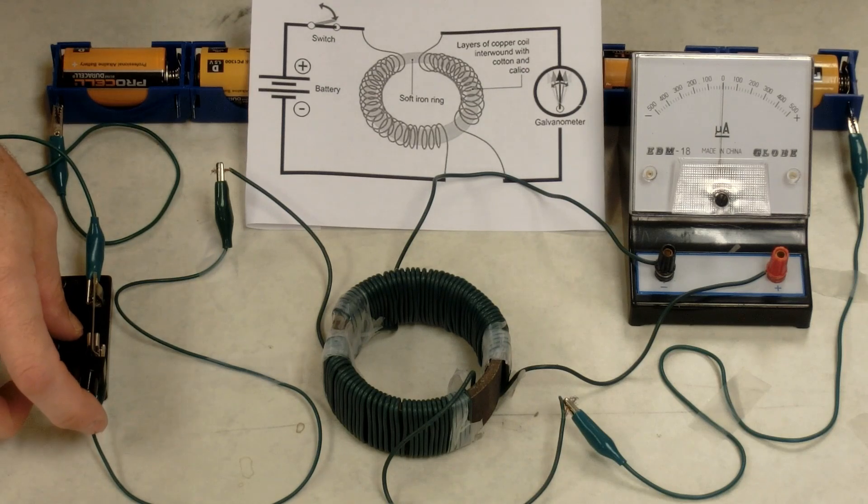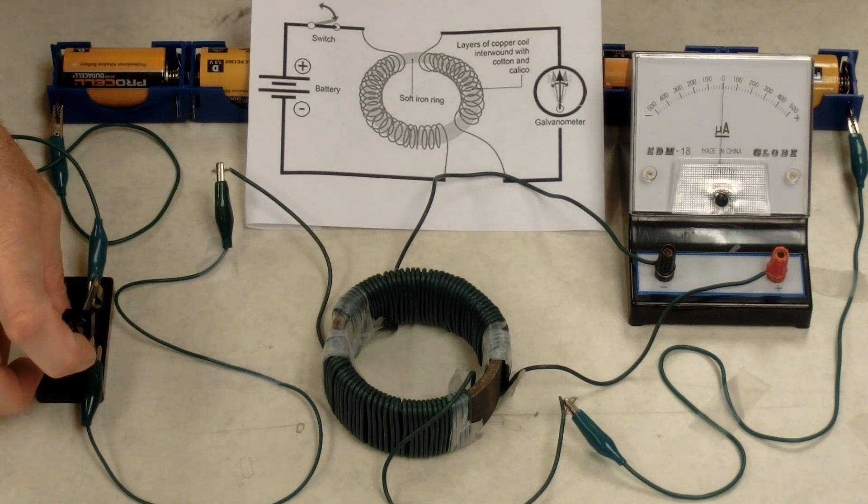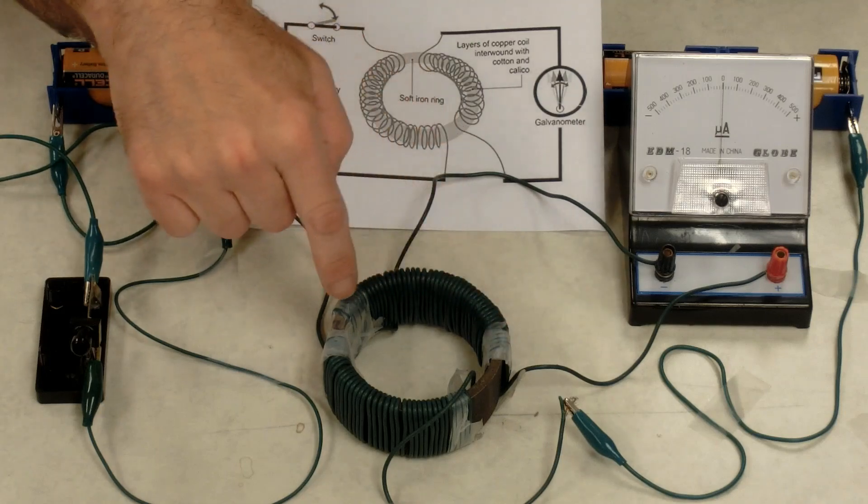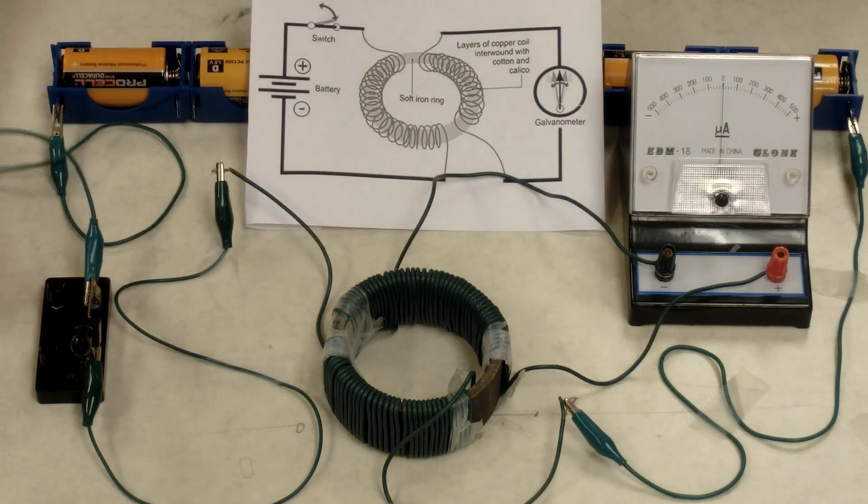But watch what happens when I open the switch and turn the current off. It deflected to the left. The current is only induced in the other coil of wire when the magnetic field is first turned on, and then when it's first turned off.